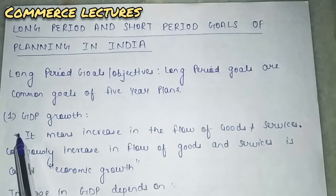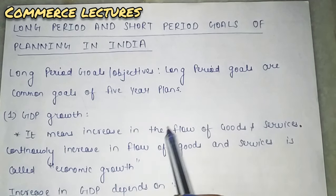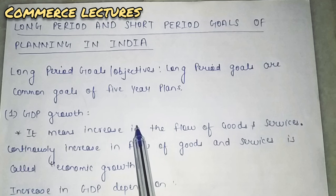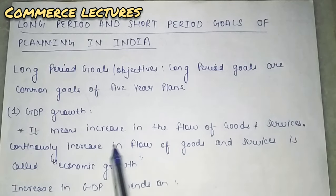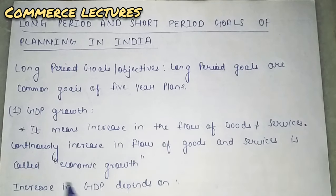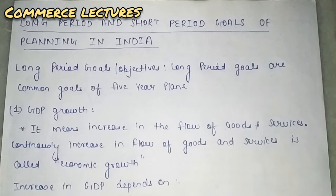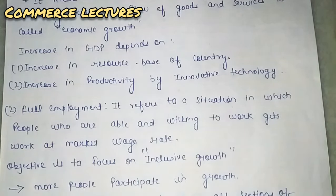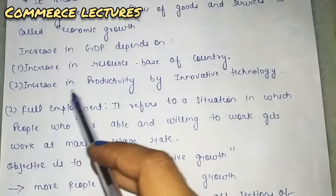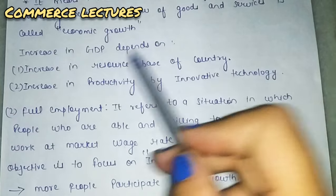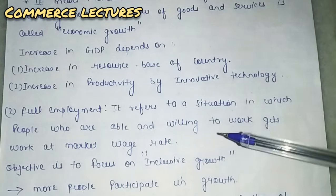The first long period goal is GDP growth, which is called economic growth. When goods and services continuously grow, that is economic growth. GDP growth depends on two factors: first, increase in the resource base of the country; and second, increase in productivity through innovative technology — new technologies and new techniques which increase production.